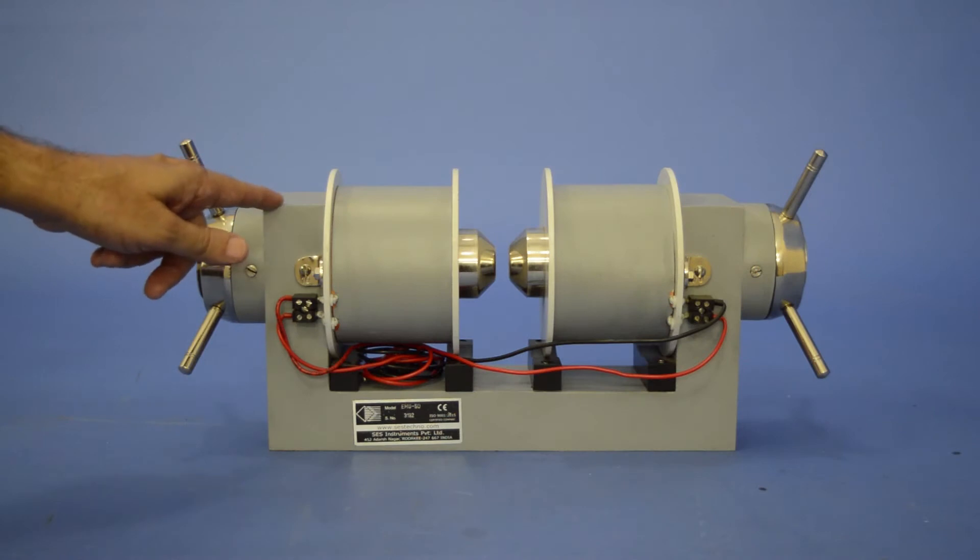Electromagnet with tapered pole piece of 25 mm. At 10 mm air gap, it can generate up to 8.5 kilogauss field.